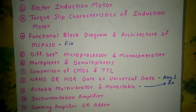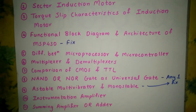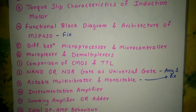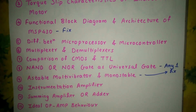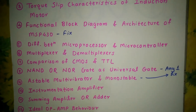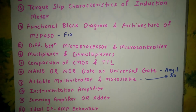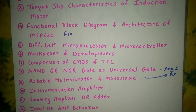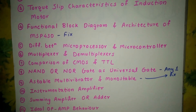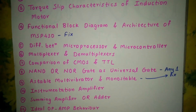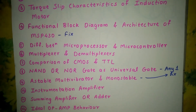Then there is multiplexer and demultiplexer, comparison of CMOS and TTL, and proving that NAND or NOR gates are universal gates. The 9th question covers astable multivibrator and monostable multivibrator — any one of these is fixed for 8 marks.